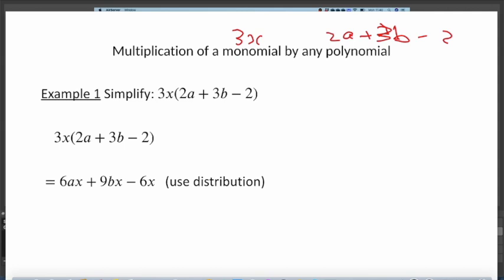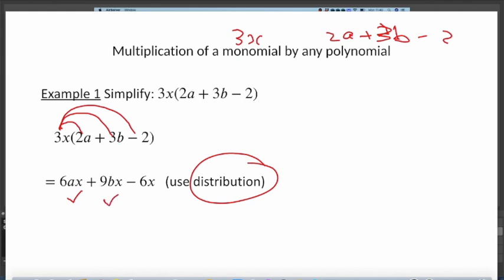2a + 3b - 2 is a three-term expression — you can call it a trinomial. So how do we multiply 3x by (2a + 3b - 2)? We use a method called distribution, which means we take 3x and multiply it by everything inside the bracket. So 3x × 2a = 6ax, 3x × 3b = 9bx, and 3x × (-2) = -6x. Those three terms are unlike terms, so you leave your answer like that.